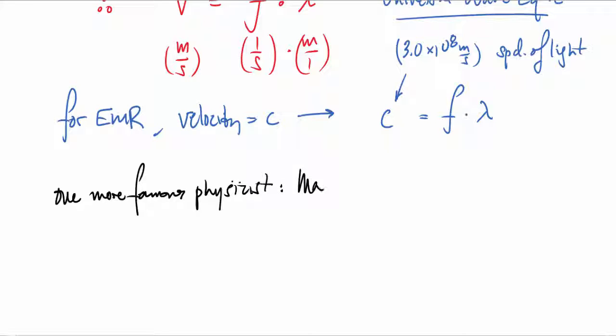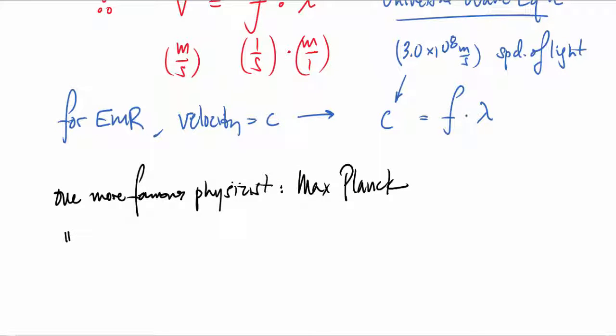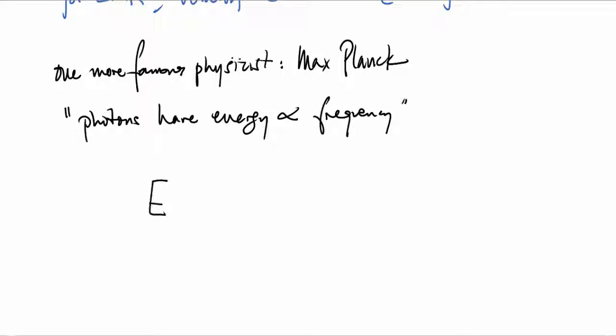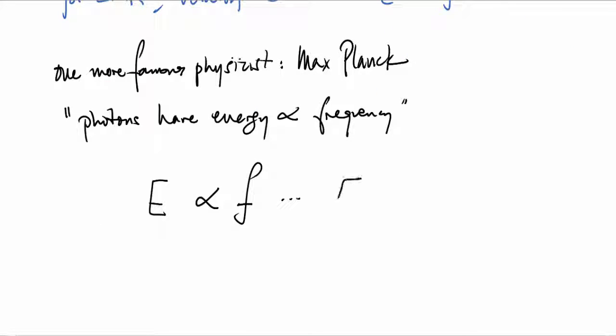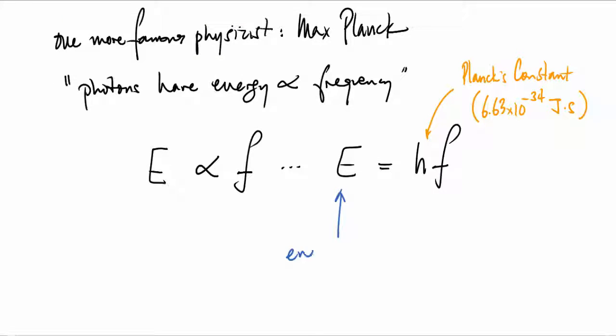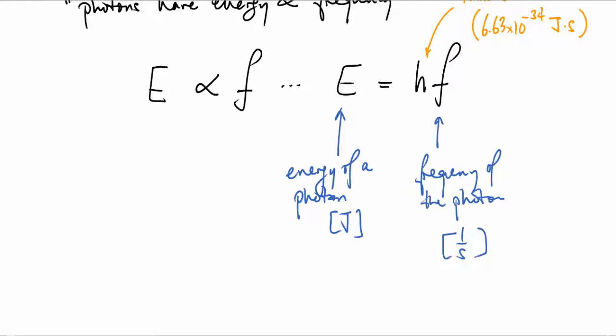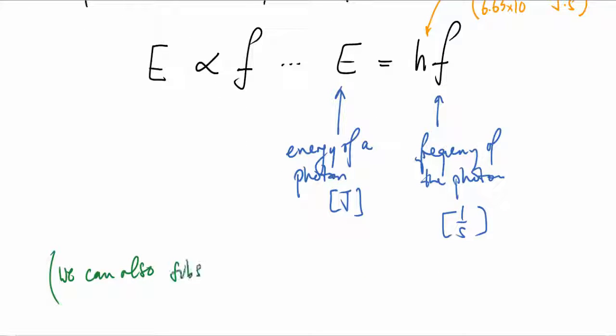There's one more famous physicist I want to mention: Max Planck. He had this idea that photons have energy that's proportional to their frequency. The statement looks like E equals h times f, where h is Planck's constant, 6.63 times 10 to the minus 34 joule seconds. The energy will be in joules for one photon, and the frequency will be in hertz.